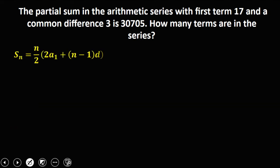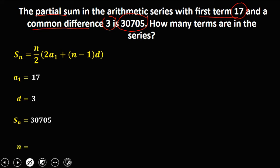From this formula, a sub 1 is the first term, which is 17. D is the common difference, which is 3. S sub n is the partial sum, which is 30,705. And n is the unknown, since we're looking for the number of terms. Now substitute these values into the formula.